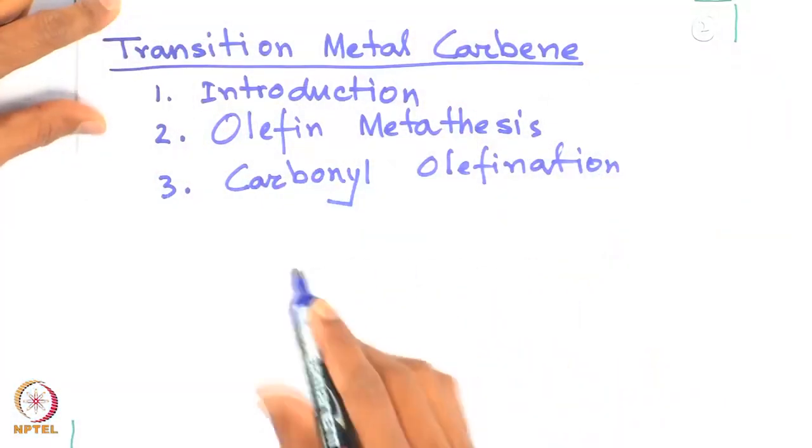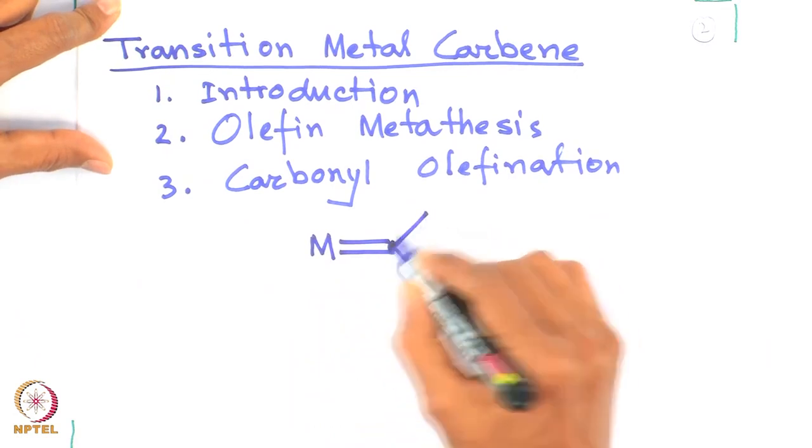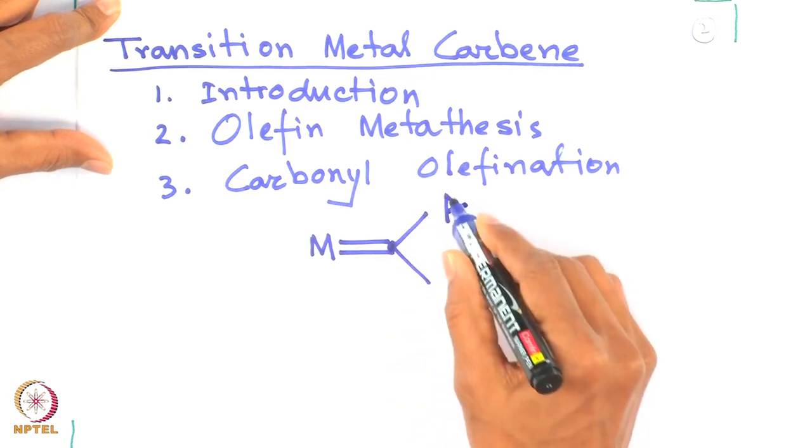As you all know, carbenes are divalent carbon centers with two atoms attached to it. Transition metal carbenes are the ones where a metal is associated with the carbon center, and the carbon is attached with two different atoms.